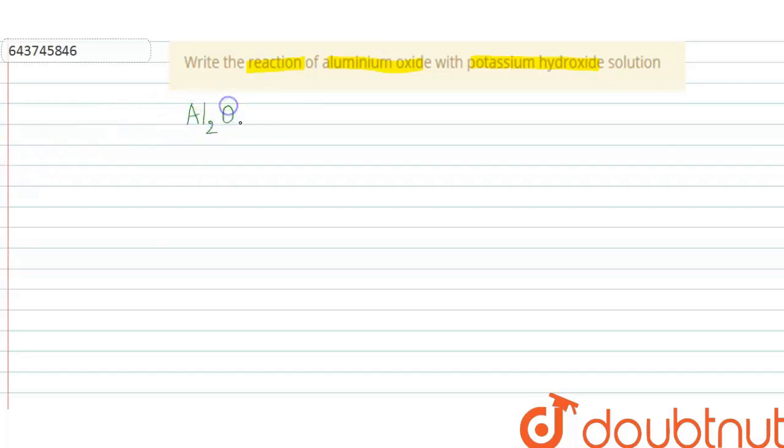that is Al₂O₃, when it reacts with potassium hydroxide solution, that is KOH solution, it reacts to give